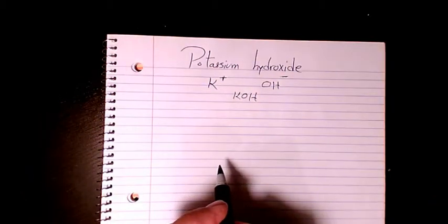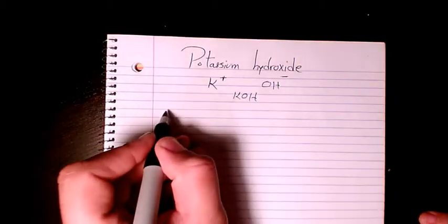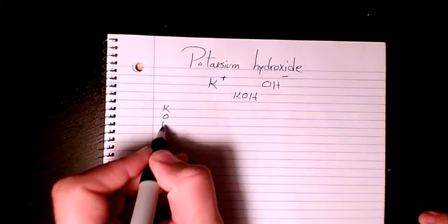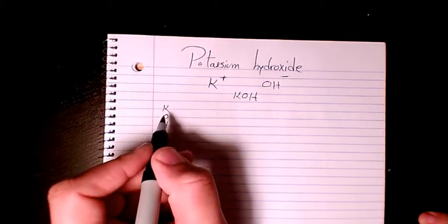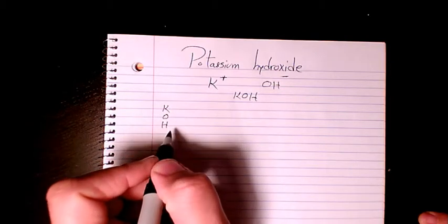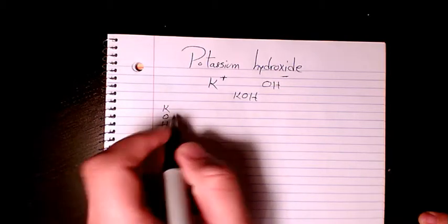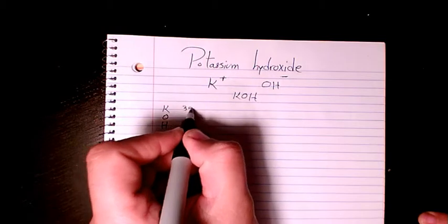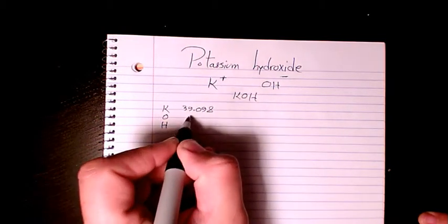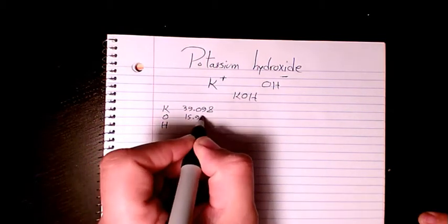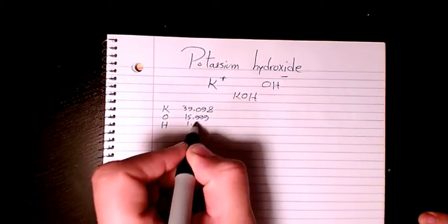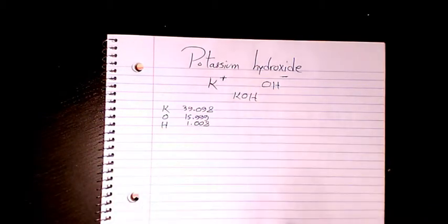the molar mass or molecular weight, you just use the periodic table. You have the atomic mass of potassium K, oxygen O, and hydrogen H. So potassium is 39.098, oxygen is 15.999, and hydrogen is 1.008. Then you add them